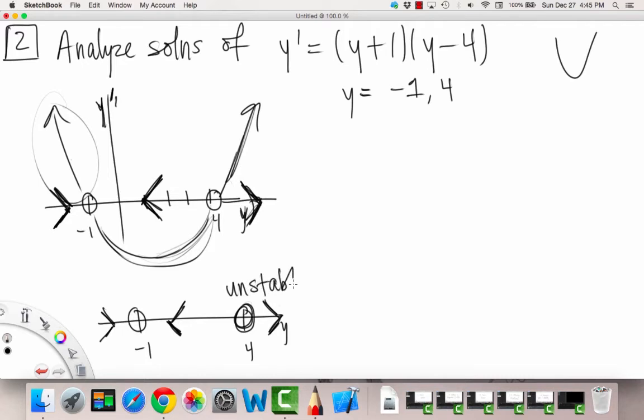Unstable when y is equal to 4. But we do have two arrows pointing inwards to the negative 1 point. So we're going to fill that dot in. And we're going to call this one asymptotically stable equilibrium point right here at y is equal to negative 1.